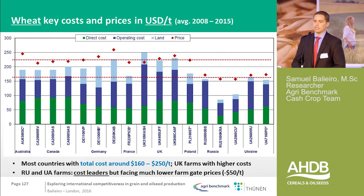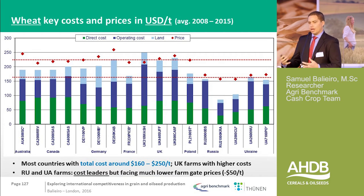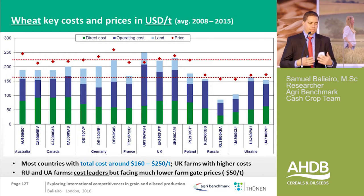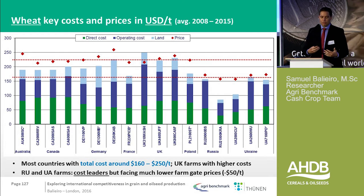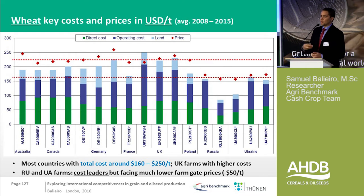We account for everything — depreciation and family labor as well. Land costs are either own land opportunity costs or rentals. What we can see is that Russia and Ukraine can produce at very low costs, at least in some farming types. But they also face much lower farm gate prices — and that makes a big difference when you compare to other crops like soybean and corn, as we will see later.